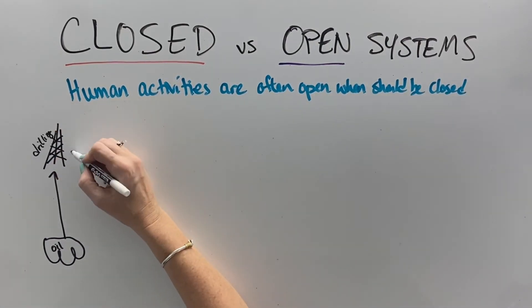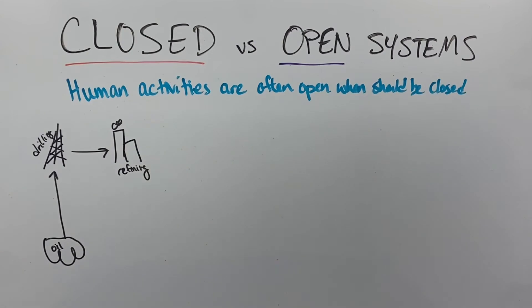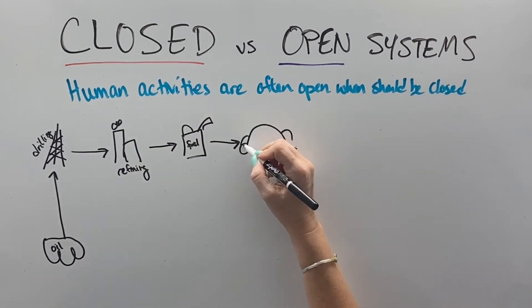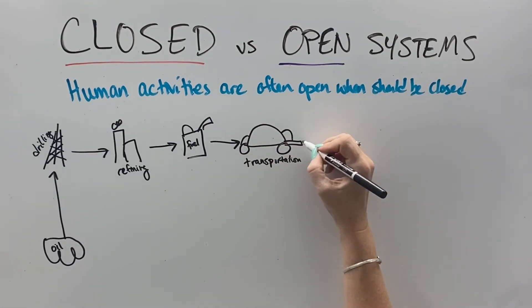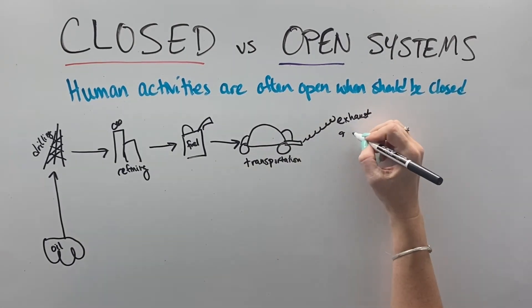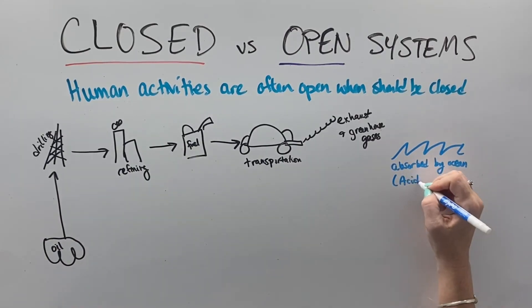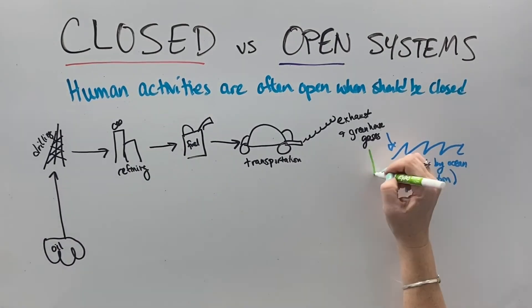Our petroleum-based energy is in an open cycle where it really should be a closed system. So we pull the oil out, we drill it, we refine it, we turn it into fuel, we put it into our cars for transportation, we get the exhaust and that creates greenhouse gases. They're absorbed by the ocean, which creates acidification.